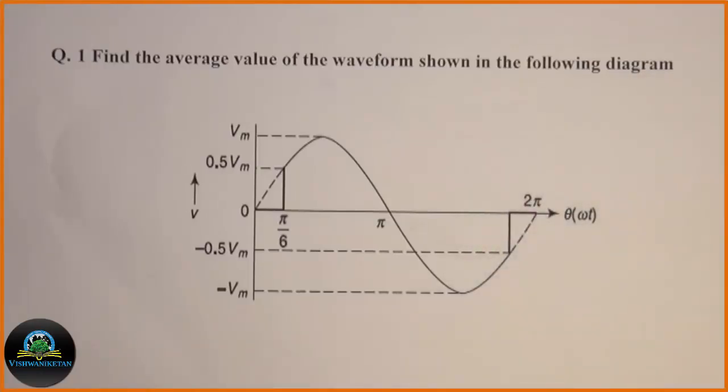And the diagram is given. If you observe the diagram, the waveform is a sinusoidal waveform which is cut at pi by 6 and then it is continued and again it is cut before 2pi. The value where it is cut, the magnitude of the waveform is 0.5Vm maximum value.